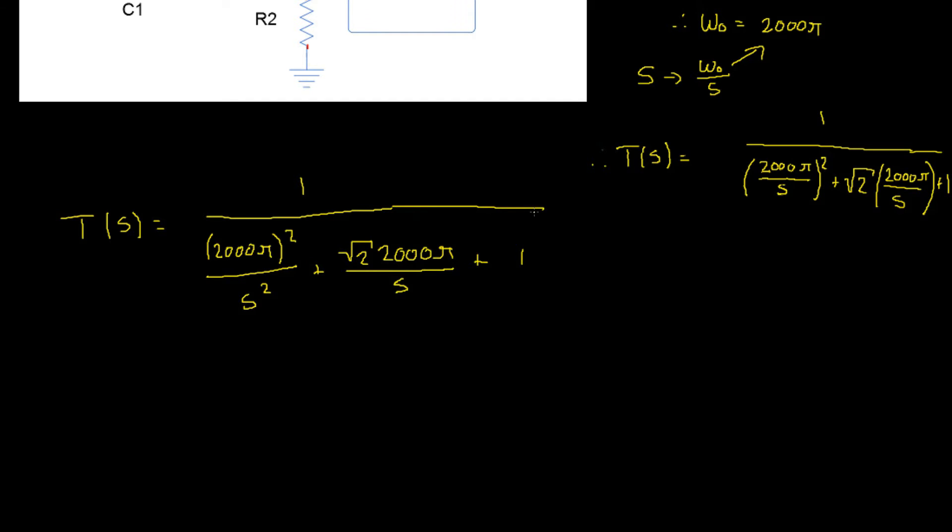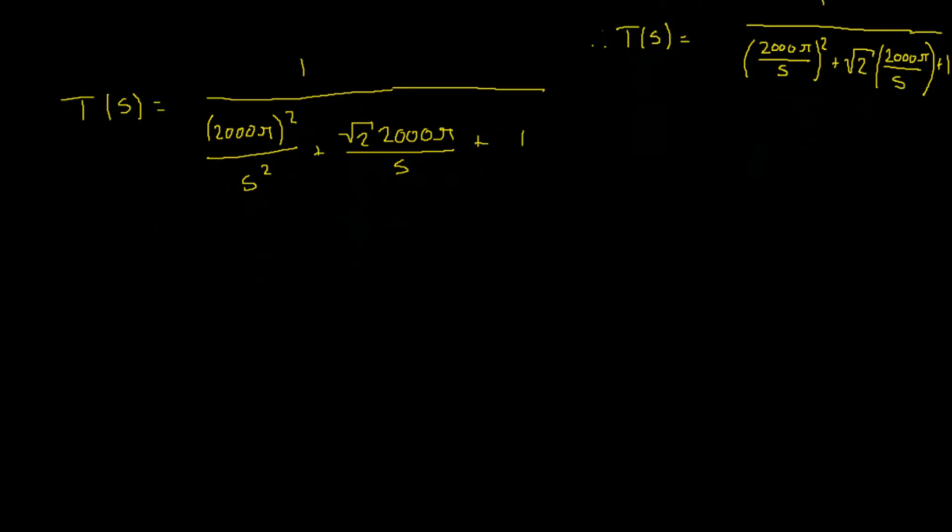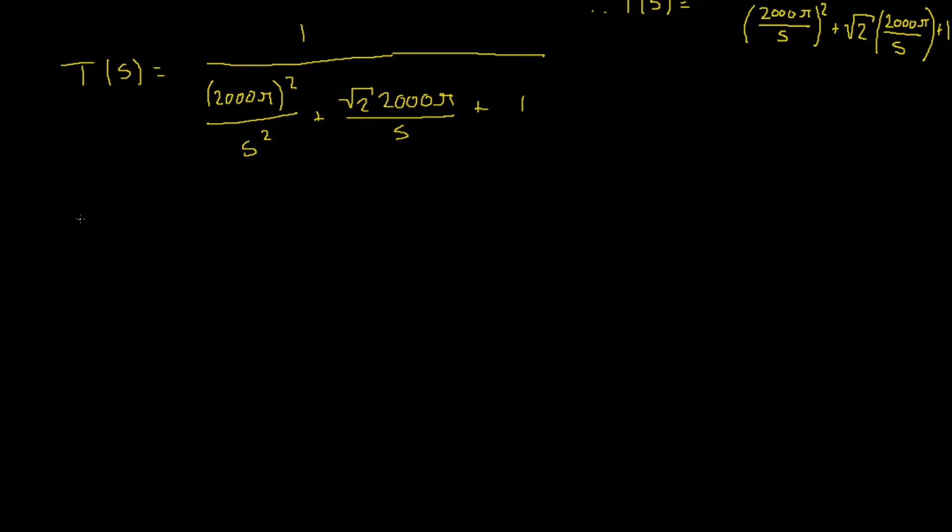Now, we're going to do the same thing we've done in previous examples and remove those denominators. So let's multiply through by S squared. Doing that gives us T(S) equals S squared over... We're going to rearrange the order, and we're going to write our last term first. 1 times S squared is simply S squared, plus the second term now. The S's would cancel, and you'd be left with root 2 times 2000 pi S, plus 2000 pi squared, as the S squared would cancel. And there we have it!